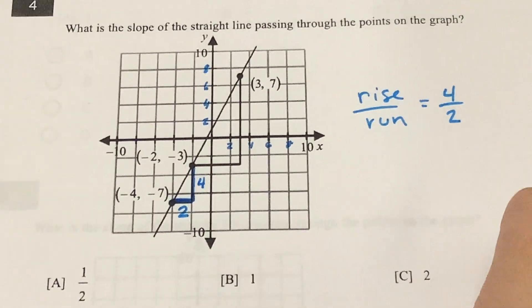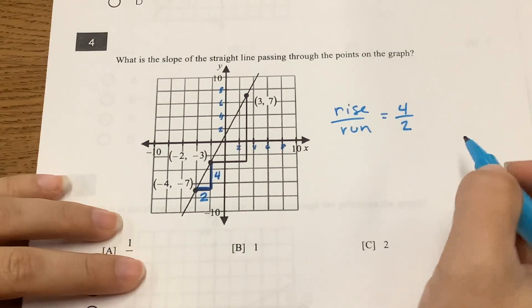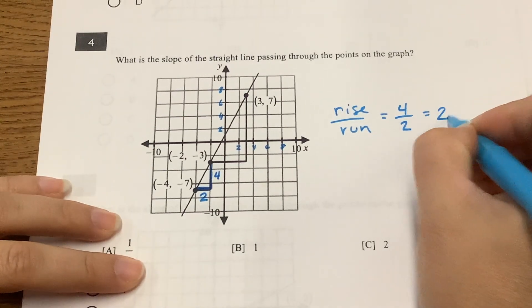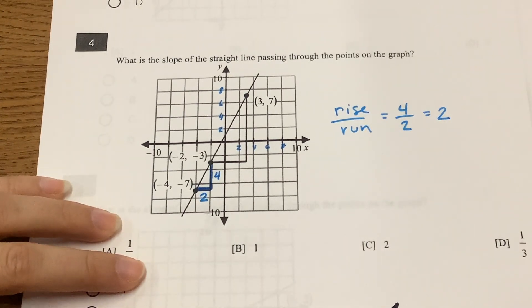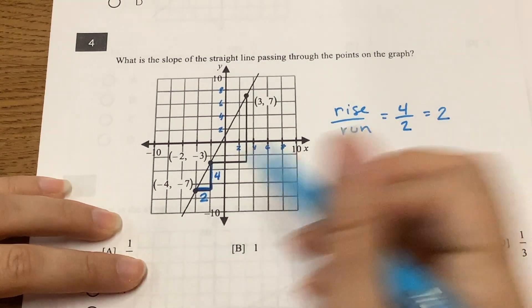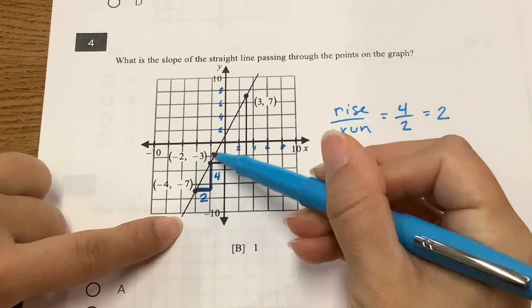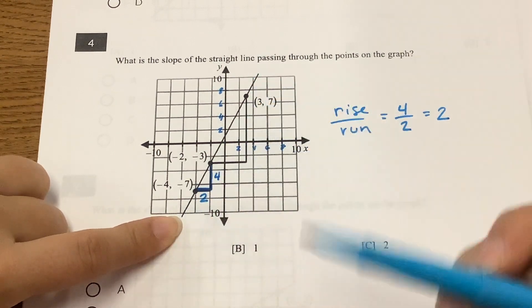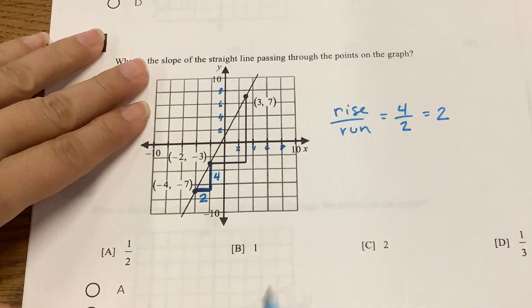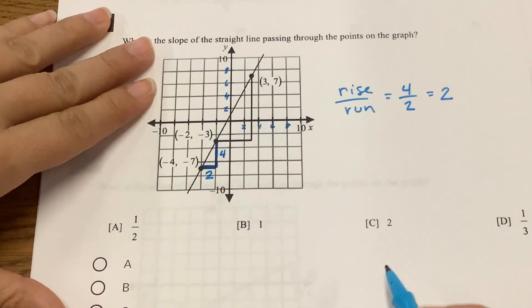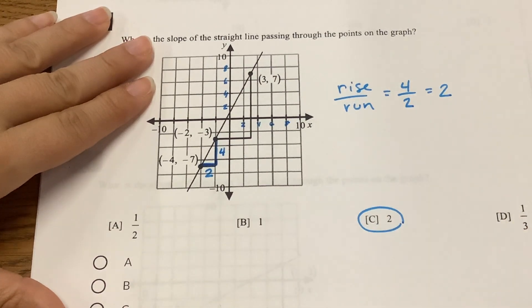And 4 over 2 is just a whole value of 2. We got positive because we're moving to the right and up each time. If you look at this, this is an uphill angle, so it is a positive slope. The correct answer choice for this was C, a slope of 2.